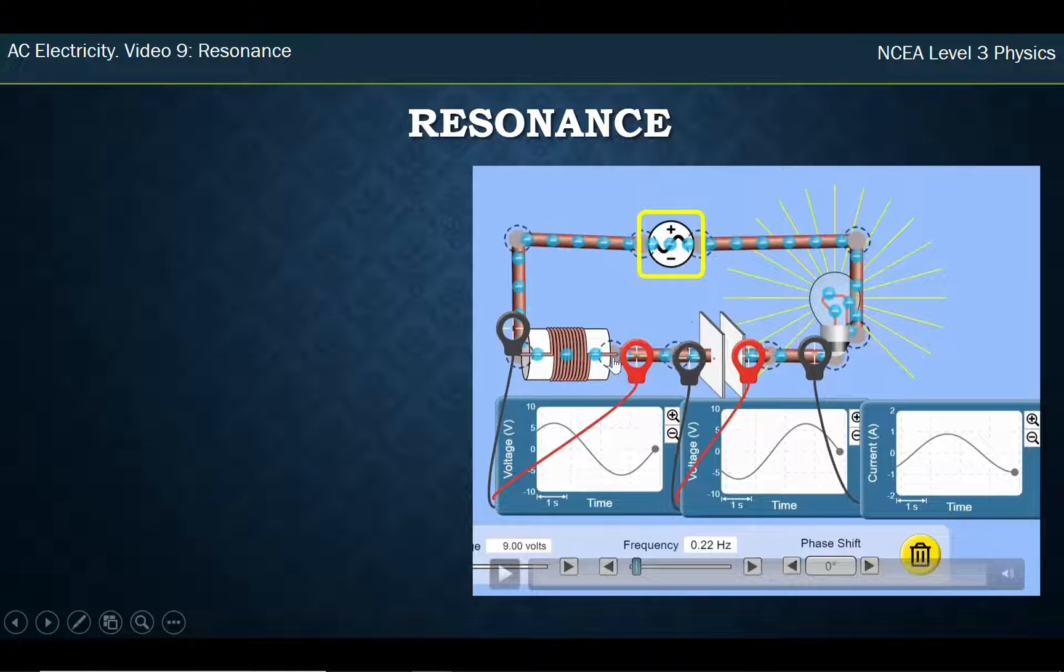And it's done through getting the frequency to such a point. This is about positive 6 and this is about negative 6. This goes down to about negative 6, this goes up to about positive 6. They're equal and opposite. And that's my concept of resonance.